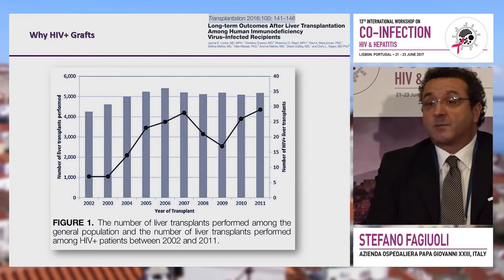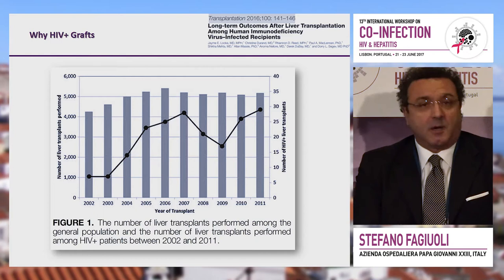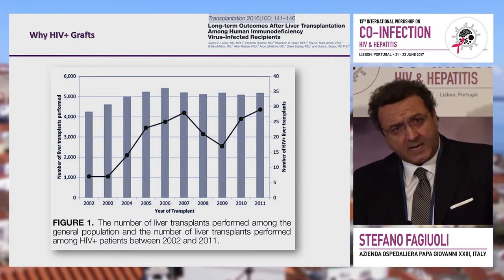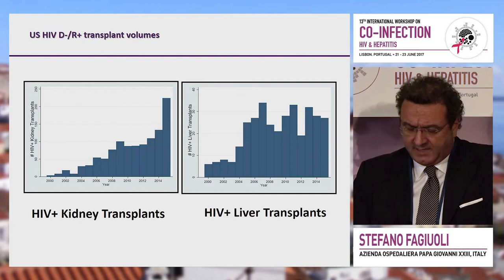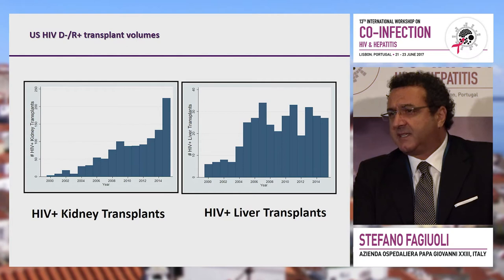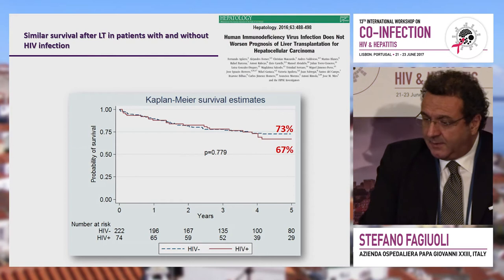Even so, out of an average of 5,000 transplants per year in the United States, no more than 30 per year use HIV positive organs — that is the current top. The numbers are growing over time, and the driver is not only good ART therapies but also the therapy for HCV.